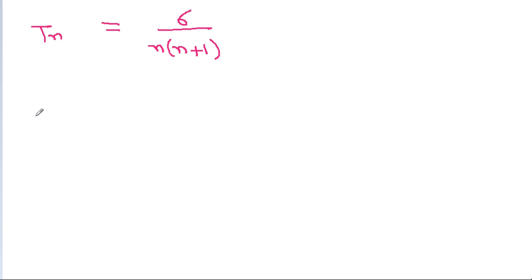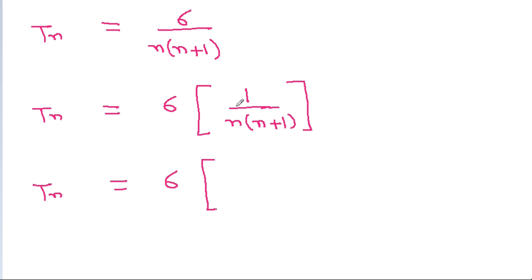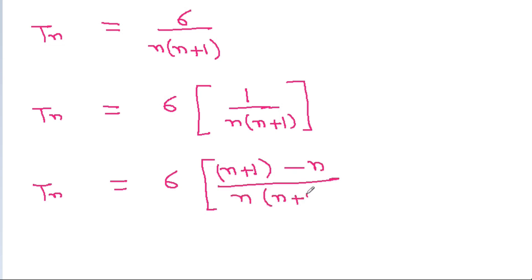So tn is equal to 6 times 1 divided by n times (n+1). The numerator 1 can be written as (n+1) minus n, divided by n times (n+1).